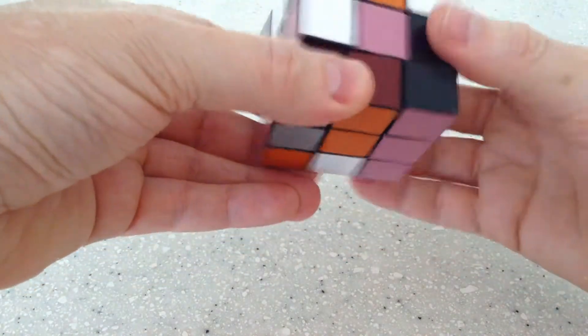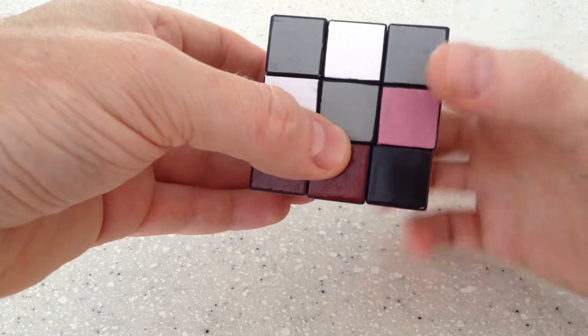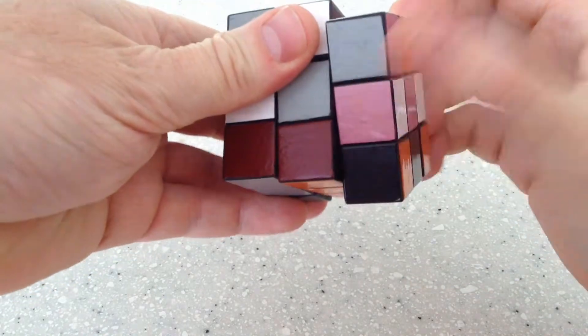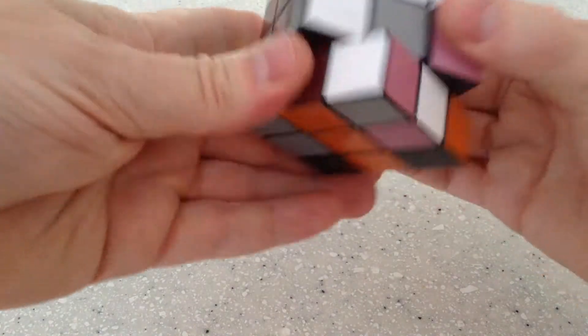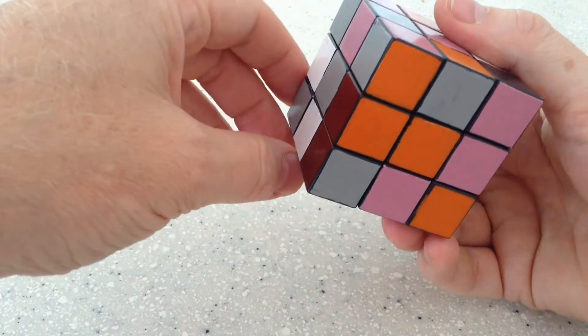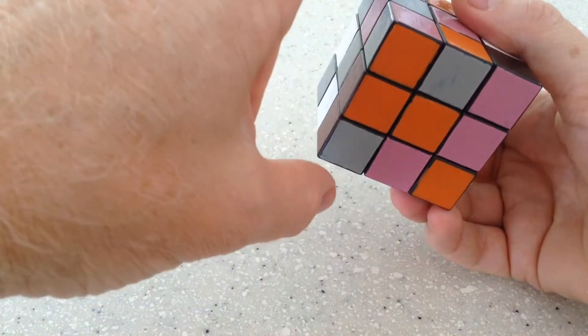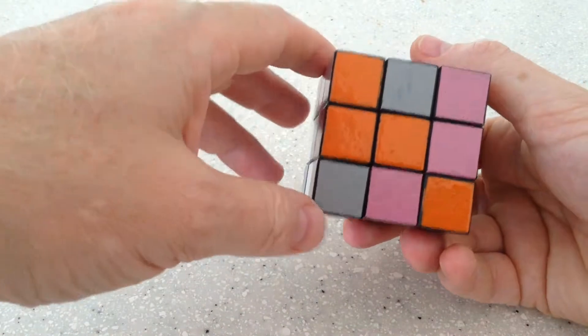Do that move here and then I need to repeat the exact same move on the same layer but the mirror image. So here. So that has swapped two pieces and then swapped them back. But it has reoriented these two.